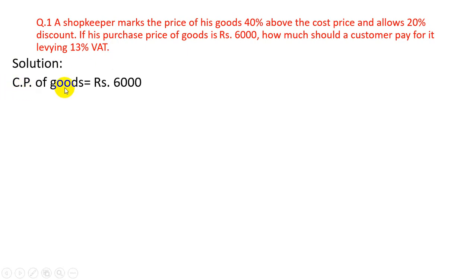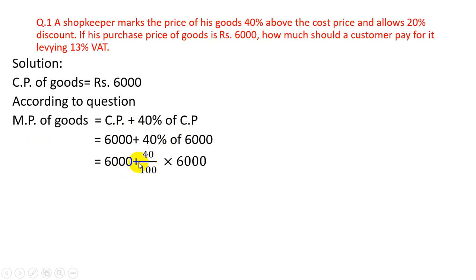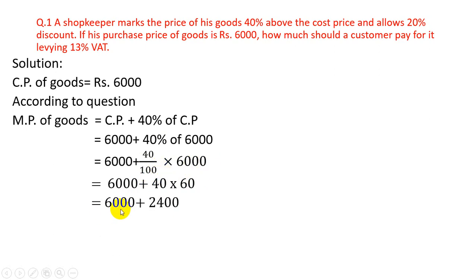Solution. CP of goods is equal to Rs.6000. According to the question, MP of goods is equal to CP plus 40% of CP, because MP is 40% greater than CP. So MP = 6000 + 40% of 6000 = 6000 + (40/100 × 6000) = 6000 + 2400 = Rs.8400.